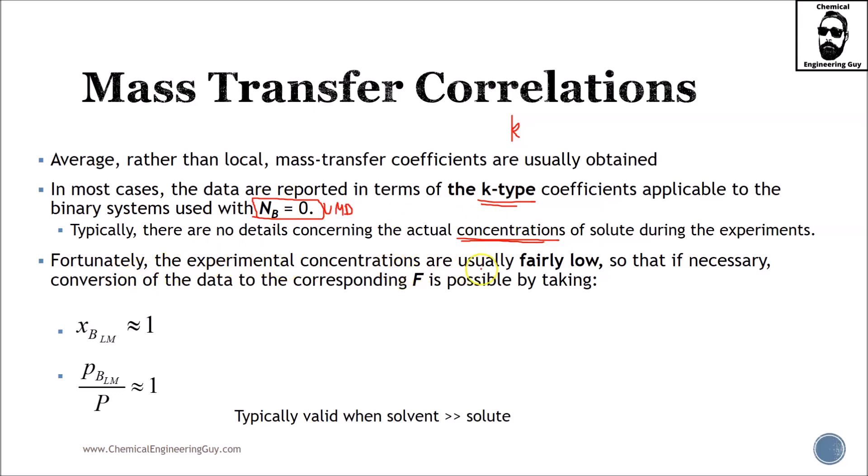Fortunately, the experimental concentrations are usually low, so that is necessary conversions of the date of the corresponding F can be taken. So this, if you don't remember or you don't know what we're talking about, this F value, please go back into the mass transfer coefficient, especially when we talk about the UMD case and EMD cases, in which the F typically is shown a lot, is the concentration times the diffusivity of A and B and the delta in C.